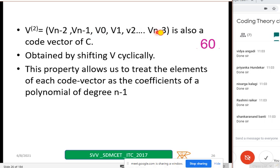Similarly, if I rotate one more time, it is also a code vector. Just this, we will get another code word just by shifting V cyclically. Cyclically. This property allows us to treat the elements of each code vector as coefficients of a polynomial of degree n minus one. So this chapter we are going to use a polynomial instead of writing simply zeros and ones. Using a polynomial only, we represent the codes. We'll see some examples after some time.